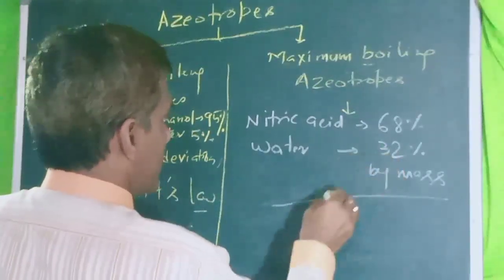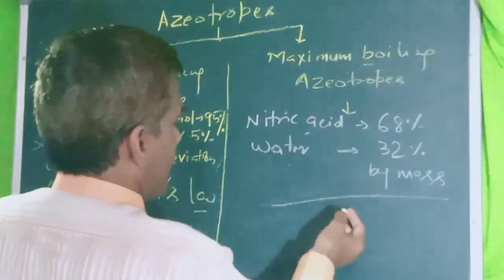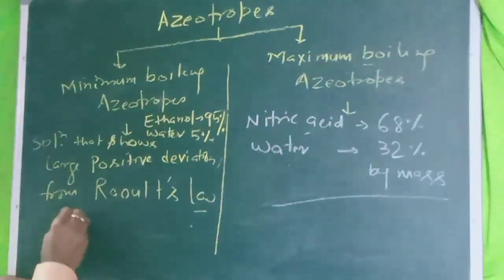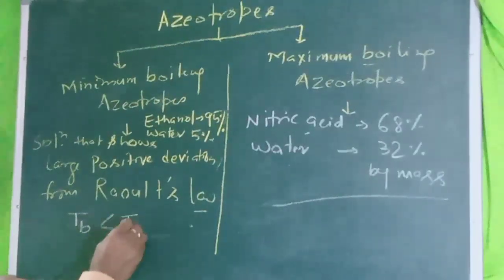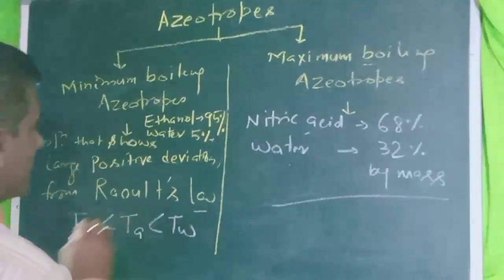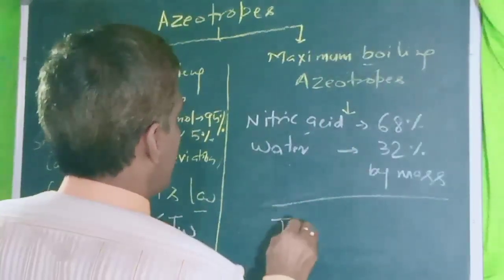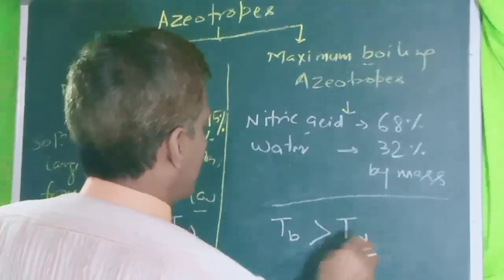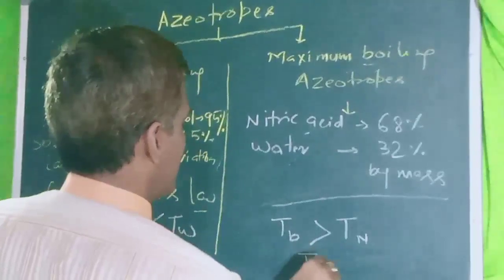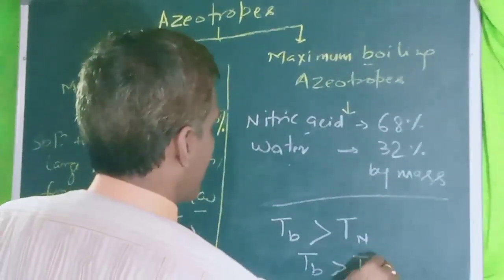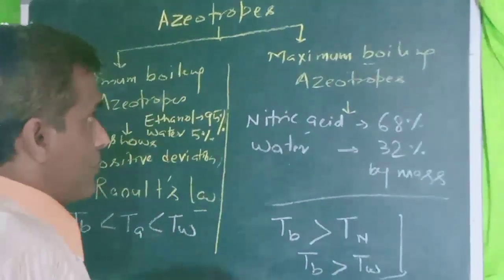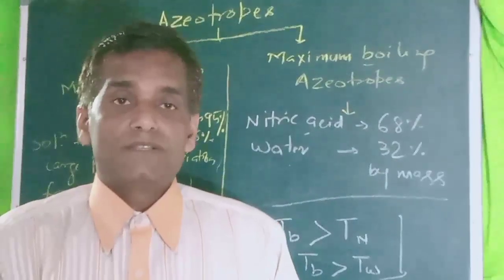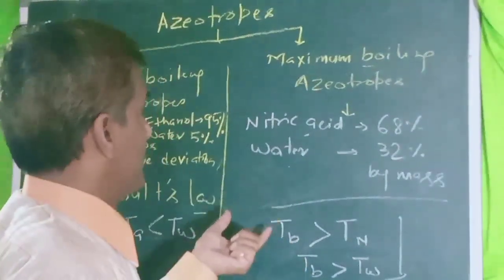The constant boiling temperature of the mixture is more than the maximum of the individual components for maximum boiling azeotropes, and less for minimum boiling. For example, the boiling point of nitric acid increases with water in the maximum boiling azeotrope. This is all about azeotropes. Next we will discover colligative properties, which is the most important topic.